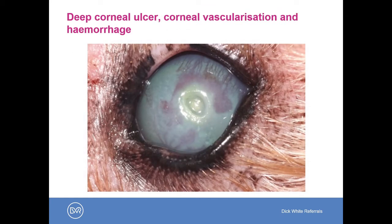In this eye, which has been cleaned for the benefit of the photograph, there is a central deep corneal ulcer which probably requires surgery. We can see extensive corneal vascularization, and those corneal vessels have hemorrhaged in various places, leading to intrastromal hemorrhages and clots surrounding the corneal ulcer.